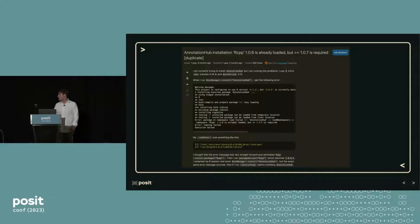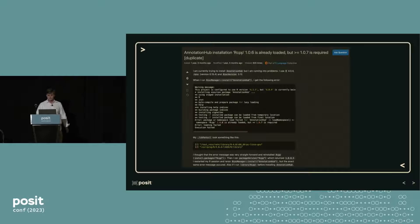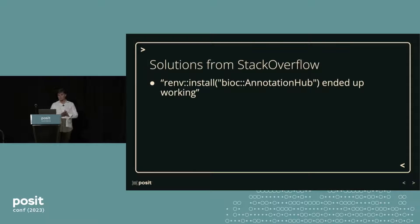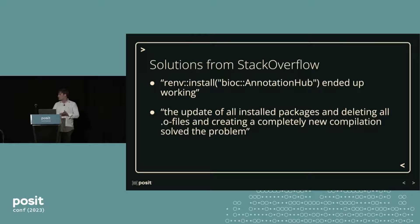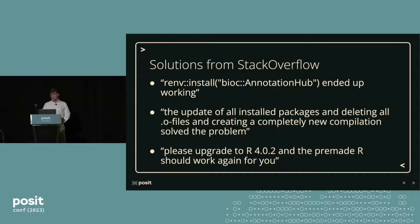This fictitious example comes from Stack Overflow. I found an annotation hub installation error: RCPP 1.0.6 is already loaded, but you need 1.0.7. Looking at the solutions from Stack Overflow — first, one user recommended using renv, which ended up working but was just downgrading annotation hub. The next user said: update all installed packages, delete all your other files, create a new environment — and that solves your problem. I don't know if you want to do that every single time. And then similarly, upgrade R, which is basically a new environment, and then everything should work again when you install all your packages. So we should know how to solve these things, but we should learn to prevent them in the first place.